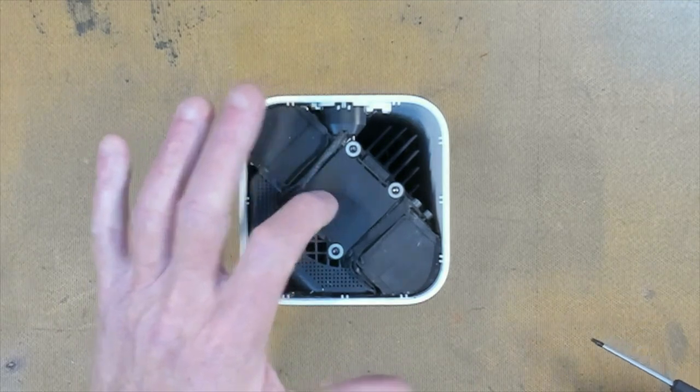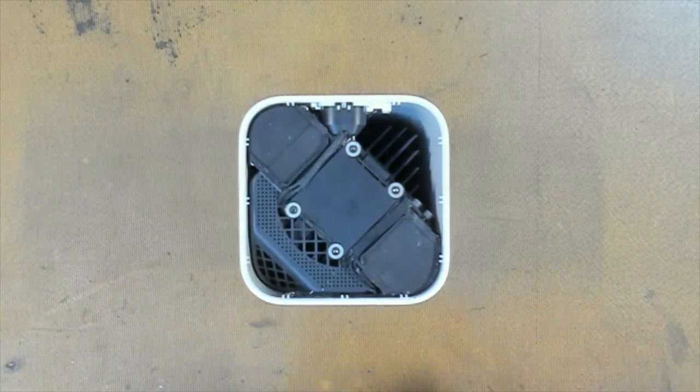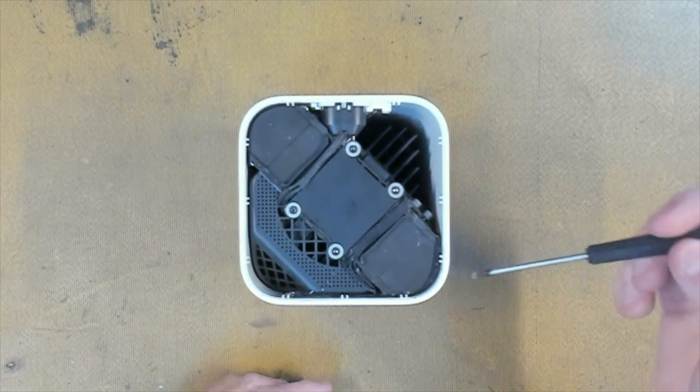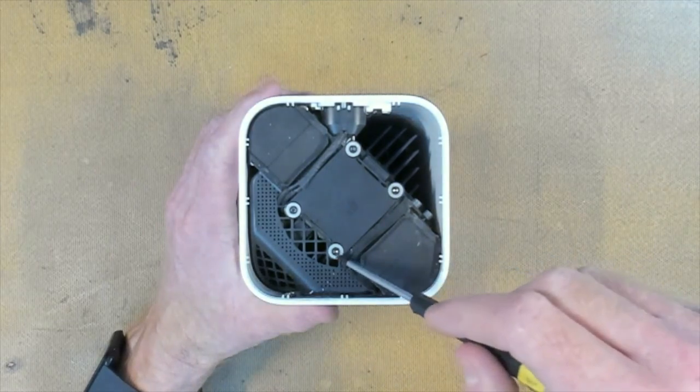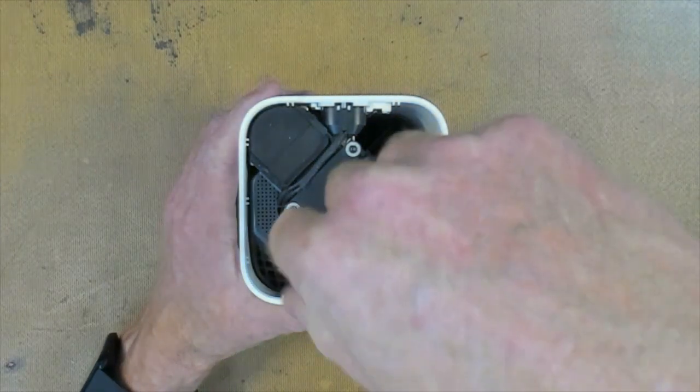This is a gasket retaining plate here, we're going to need a T8. So we'll take these four screws out.